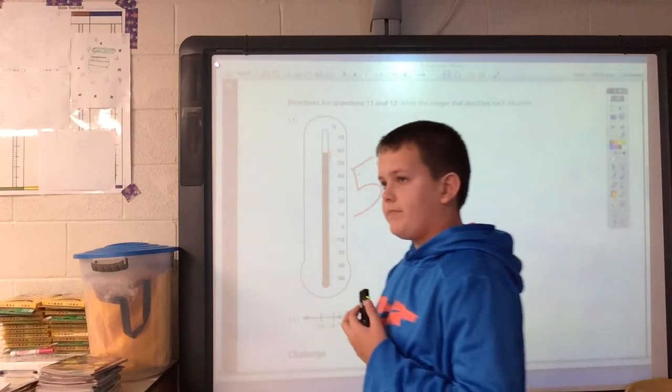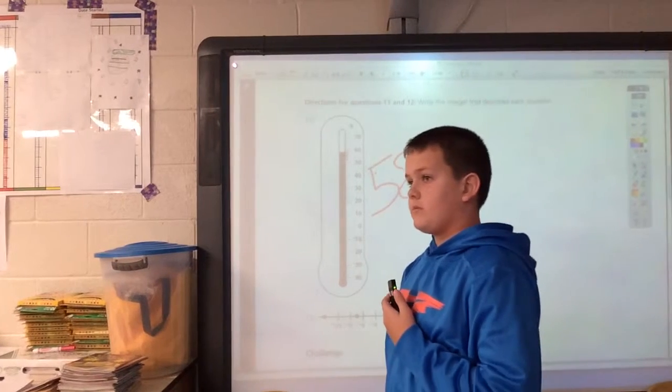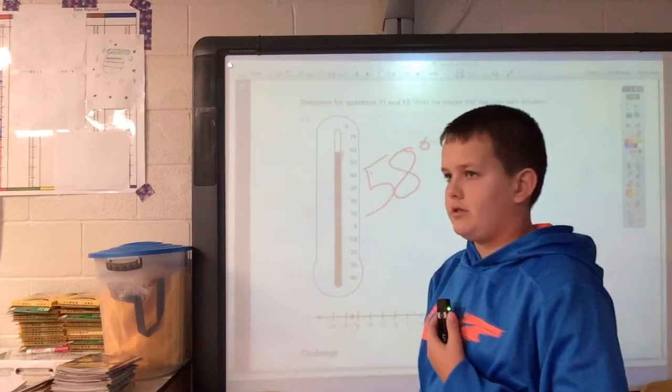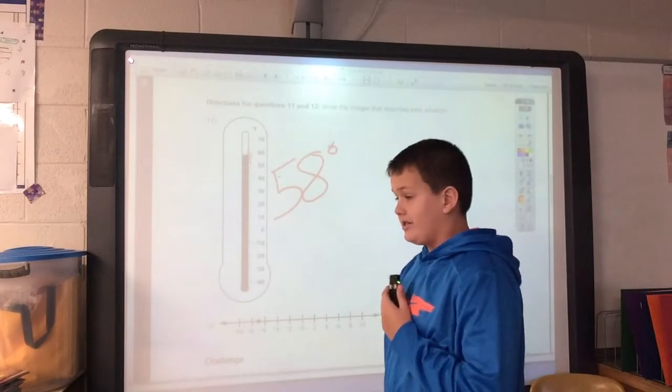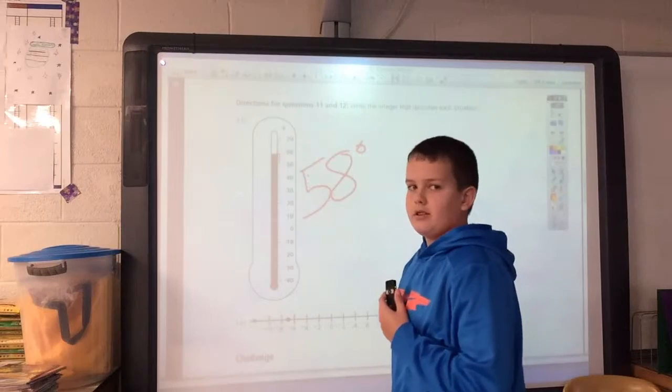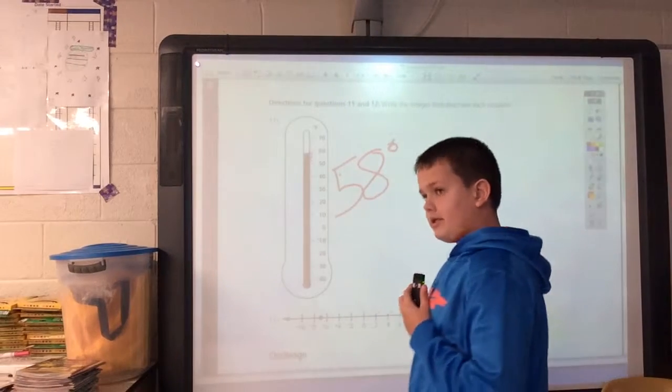And I think you could have also said, on this one, be precise - number 6. You didn't estimate around the temperature. You counted each one of those little lines and saw it was right at 58, so you could have said be precise too.